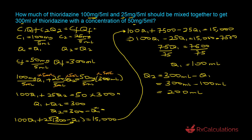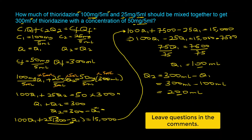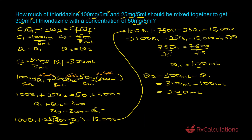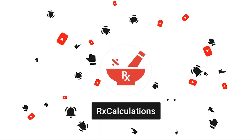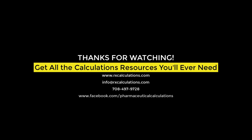So we need 100 milliliters of the 100 milligrams per 5 ml solution. For Q2: 300 minus 100 equals 200 milliliters of the 25 milligrams per 5 ml solution. Mixing these gives 300 milliliters of the 50 milligrams per 5 ml solution. If you need more examples on the algebraic method, I'll link videos in the description and cards. Please like, share, and subscribe — thank you for watching!